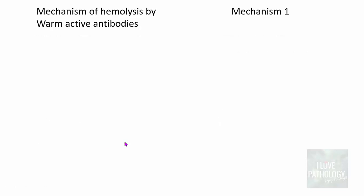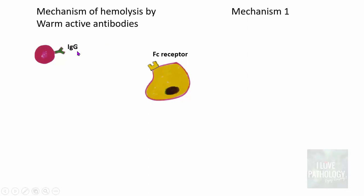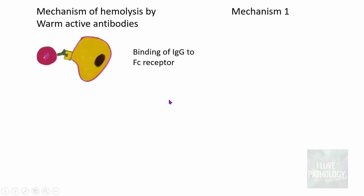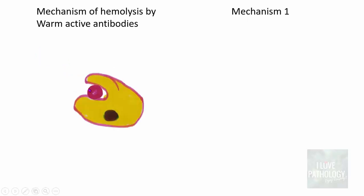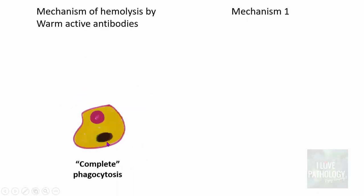Now let us understand the pathogenesis of hemolysis by warm active antibodies. There are two mechanisms. In mechanism one, consider an RBC coated with IgG antibody. Macrophages have an Fc receptor for this antibody. Binding of IgG to the Fc receptor causes a conformational change on the macrophage surface — it throws out pseudopods and engulfs the entire RBC. This is referred to as complete phagocytosis.